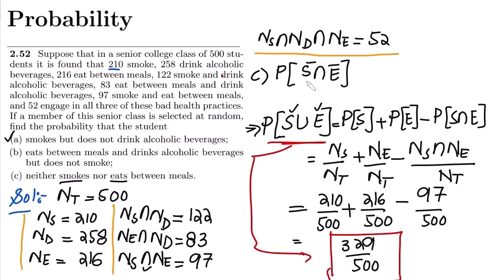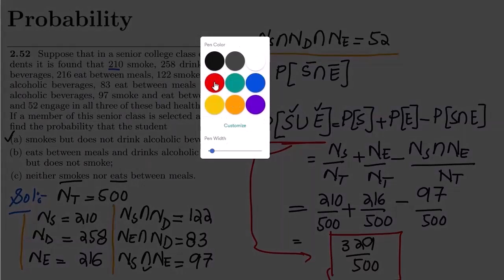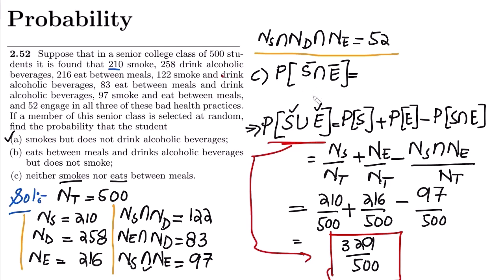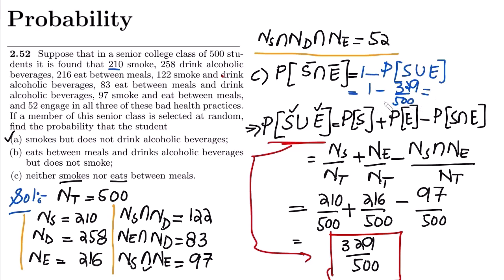Now to find the probability that the student neither smokes nor eats between meals, I subtract from 1: 1 minus 329/500 = 171/500. That is the solution to part (c). I hope you have understood the underlying concepts and the steps taken in this question. I'll see you with similar types of questions in the upcoming video.